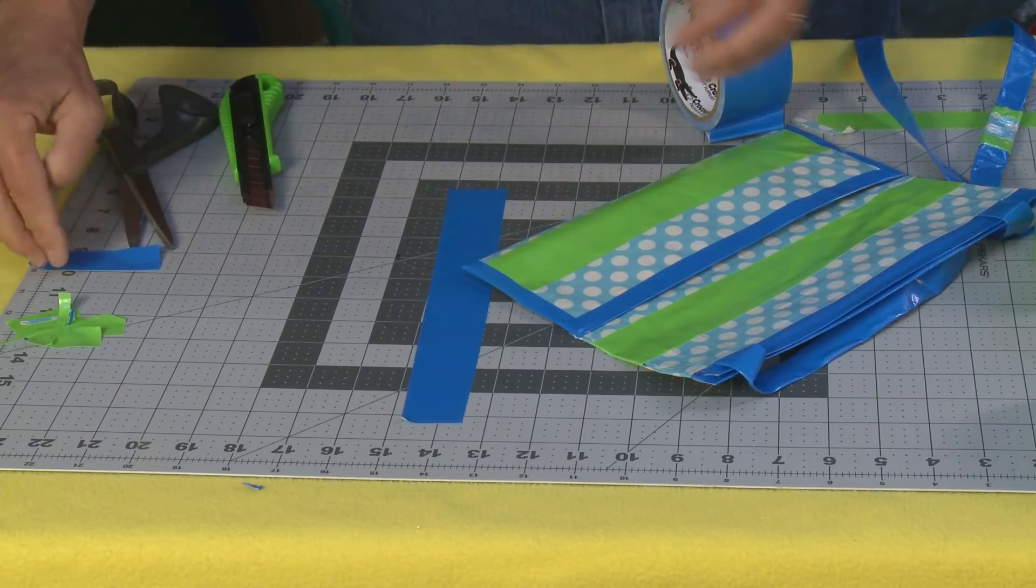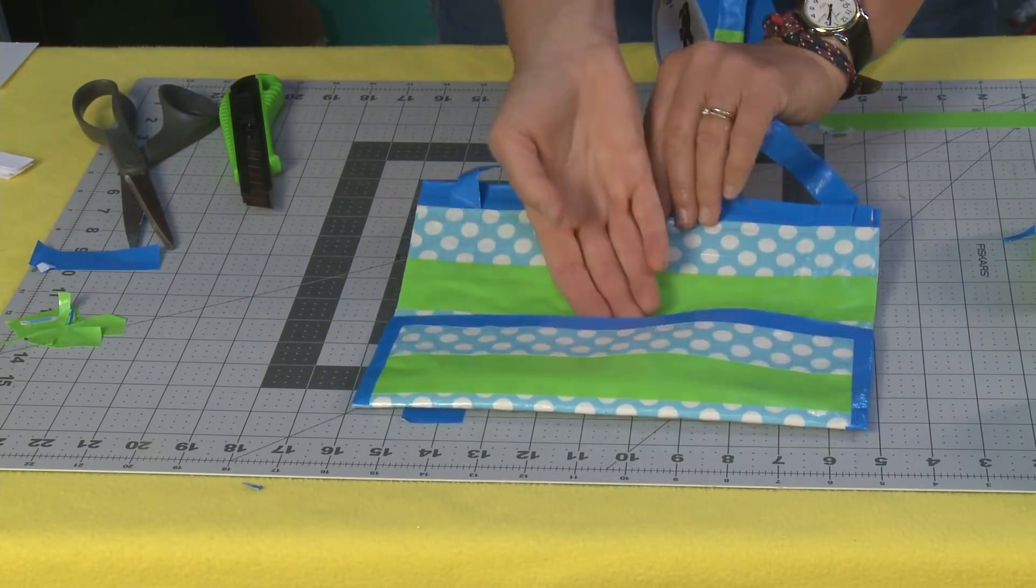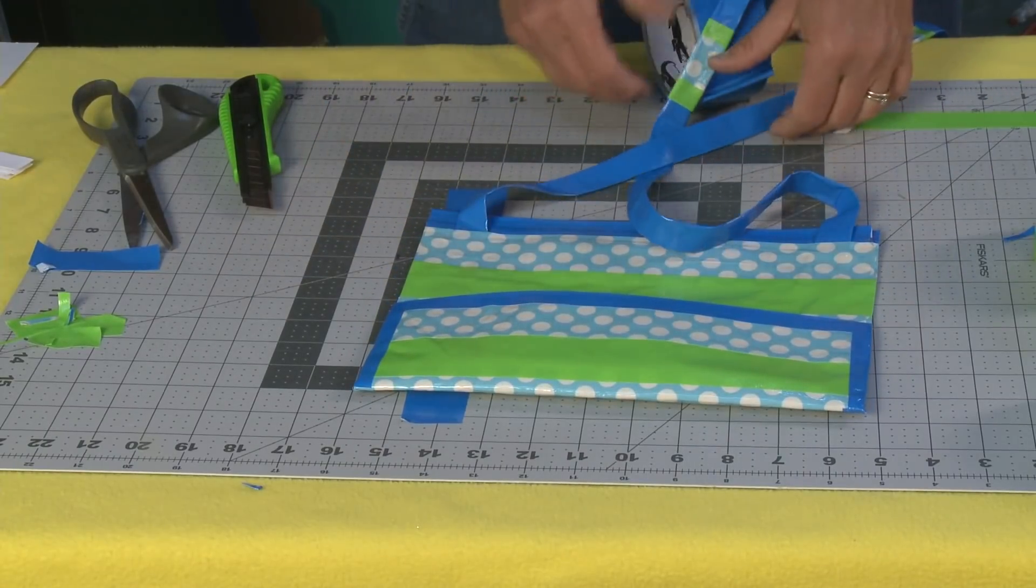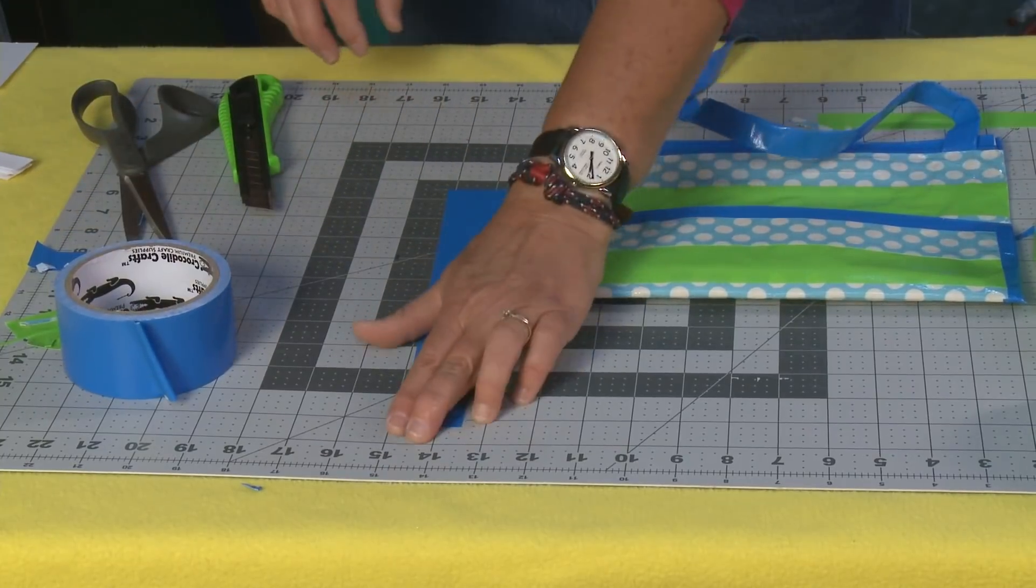Now you also can leave this at this point and have a nice little flat bag, but I'm going to give it a little pooch. So because I'm going to give it a pooch, I'm going to get some tape ready for the bottom.